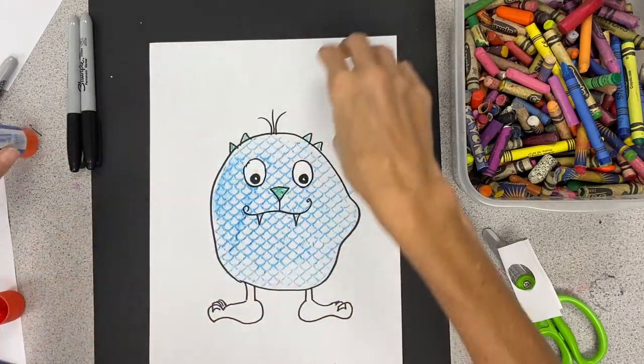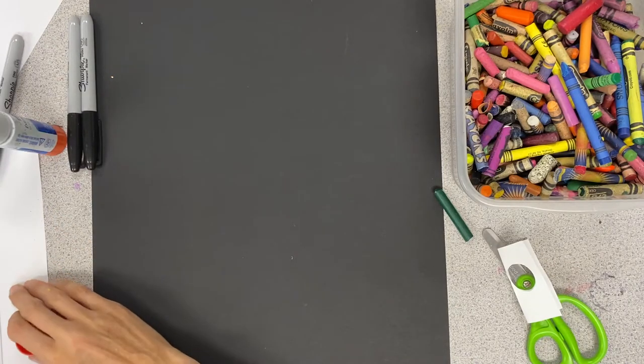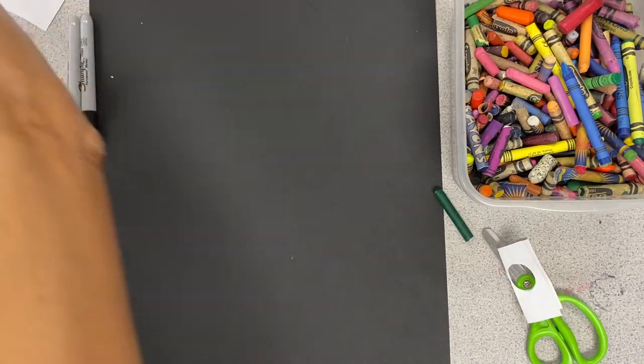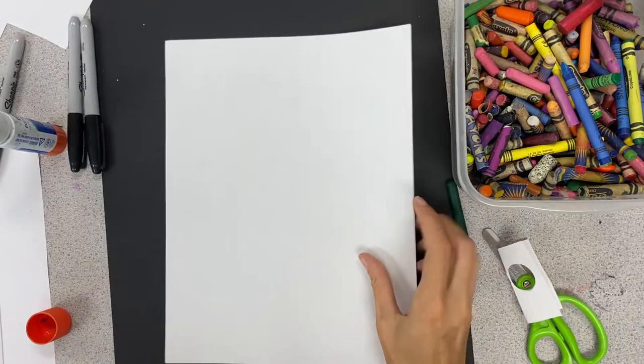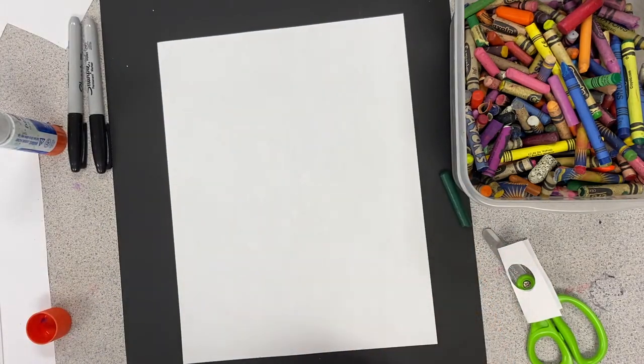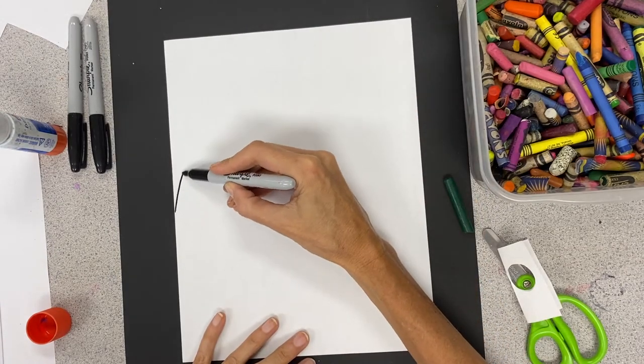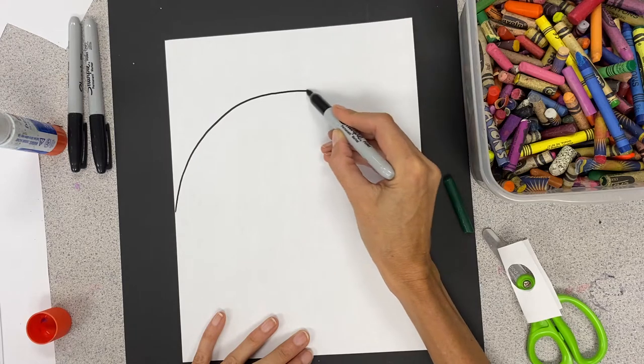It might be easier if you do this, drawing your monster first, so let's try it that way as opposed to doing the rubbing first. So I'm going to get another piece of paper. This time I'm going to go ahead and draw a really big monster. He's going to be really big, so he's going to be kind of going off the page a little bit.